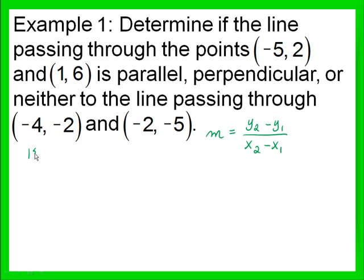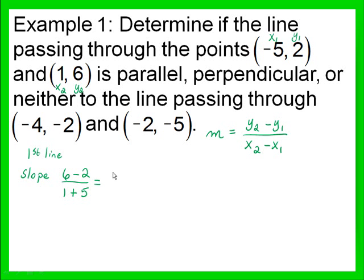For our first line, finding the slope and labeling my ordered pairs: 1 is x sub 2, 6 is y sub 2, negative 5 is x sub 1, and positive 2 is y sub 1. So the slope of the first line is 6 minus 2 over 1 minus negative 5. Remember, minus a negative is plus the positive, so 6 minus 2 is 4, and 1 plus 5 is 6. Reducing that fraction — 2 divides into both 4 and 6 — so we get 2 thirds.